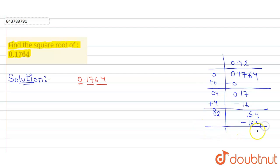So our final answer... Therefore, the square root of 0.1764 is 0.42.